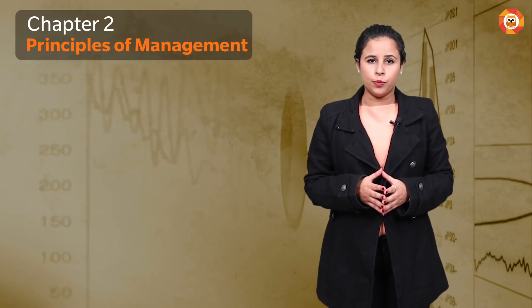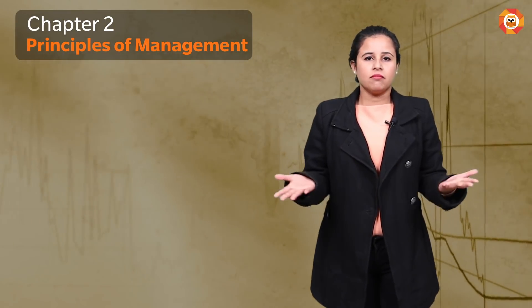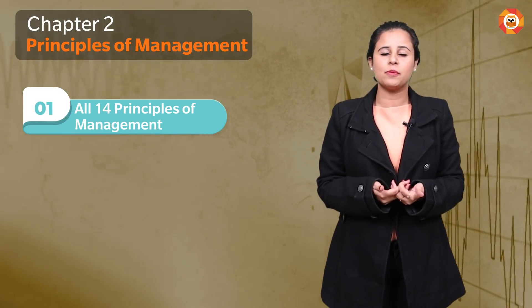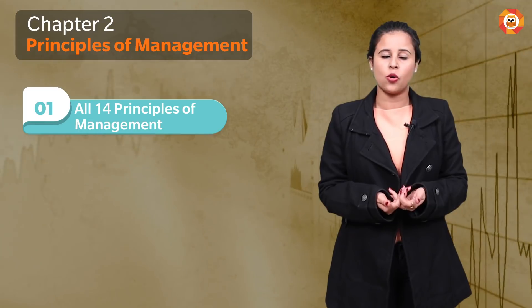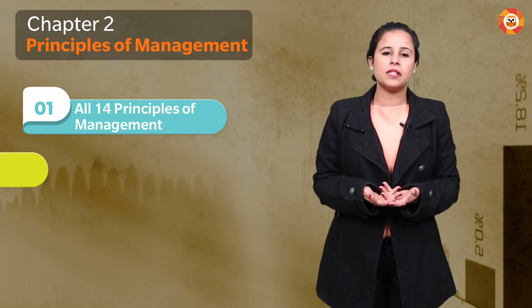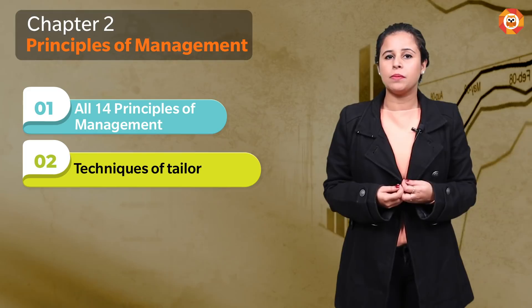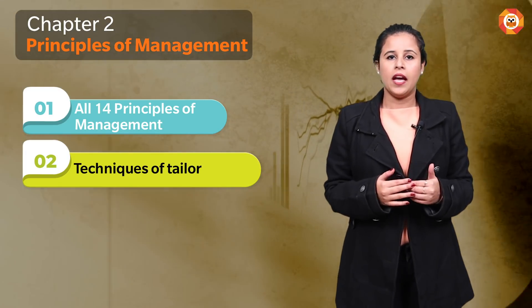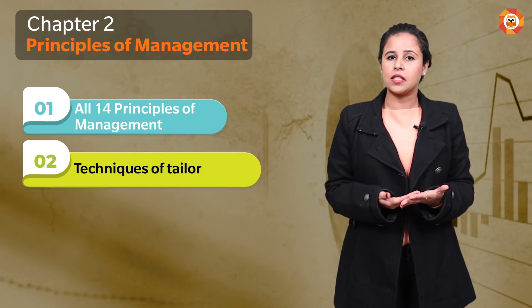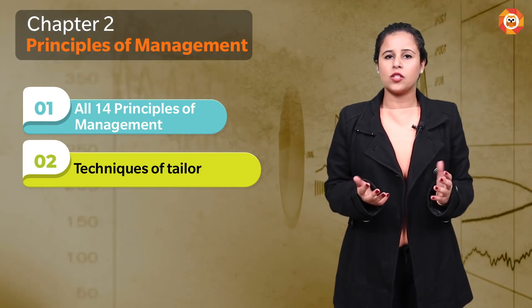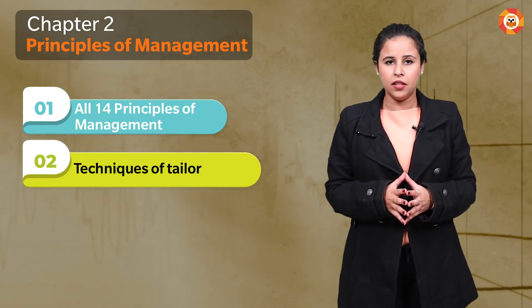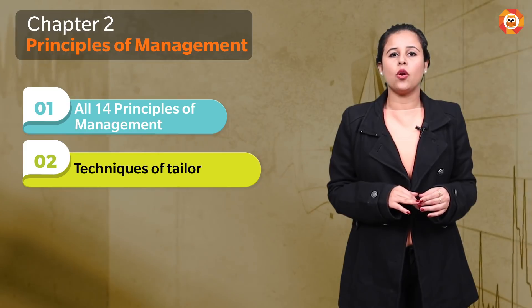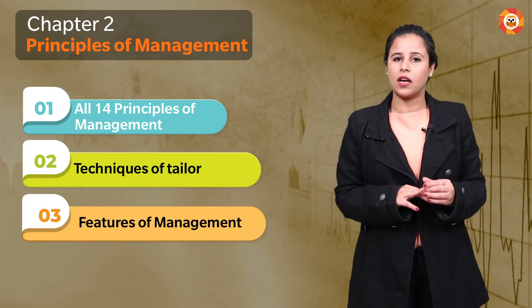Coming on to Chapter 2 — Principles of Management. I should say it's very important that you do everything in it: all 14 principles of Fayol, four principles and techniques of Taylor, and what is covered in every principle. You need to clearly know these because they are equally important and I cannot tell you which principle will come. So in Chapter 2, cover all principles and techniques along with the features of principles of management.